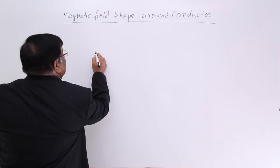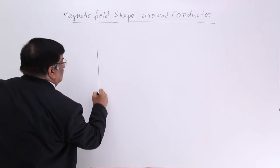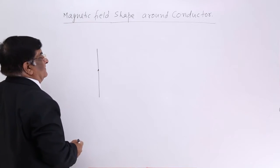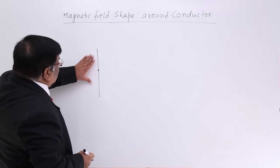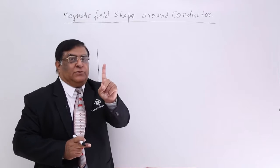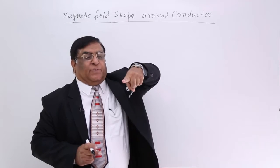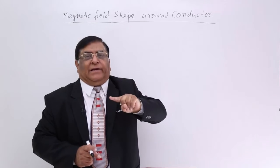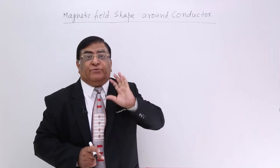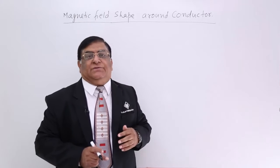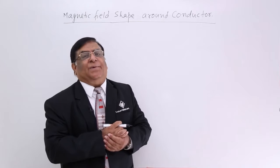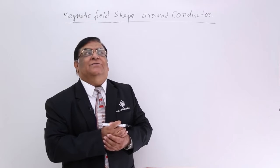When current is flowing in a conductor, if I put a magnetic needle here, this conductor has current going up. In magnetic field physics, we will have to visualize three dimensions — along the x-axis, y-axis, and z-axis. All the explanation will require three dimensions.